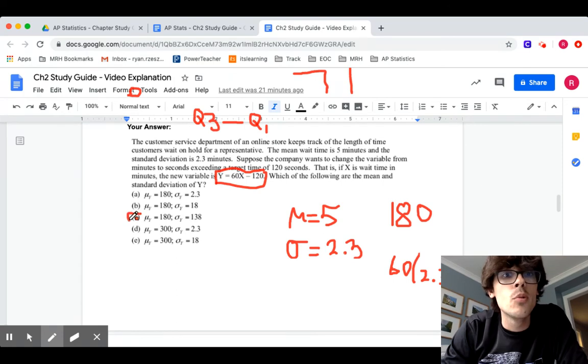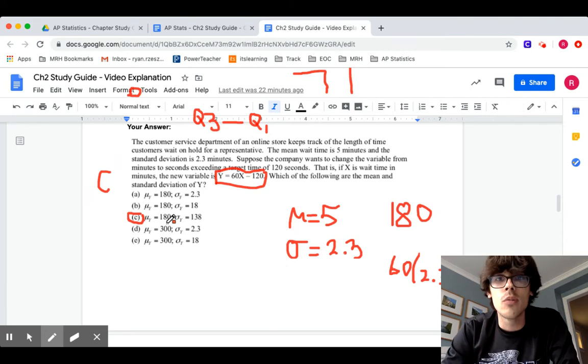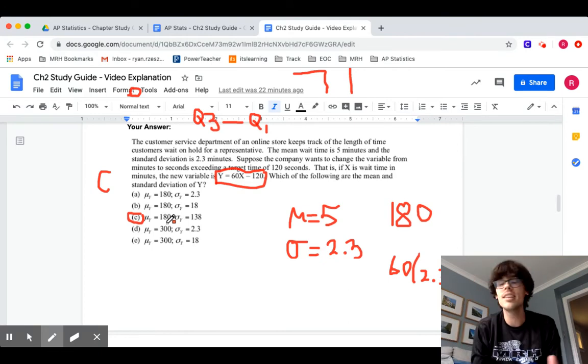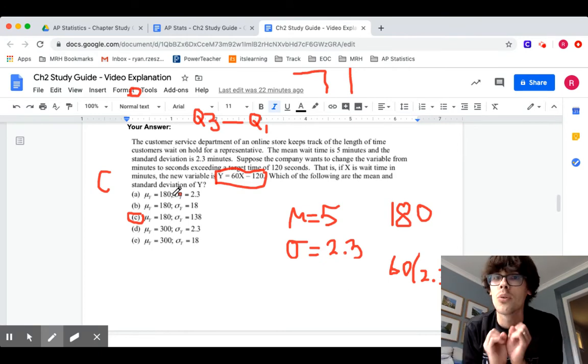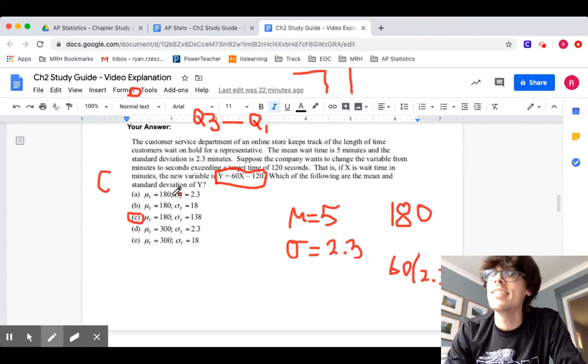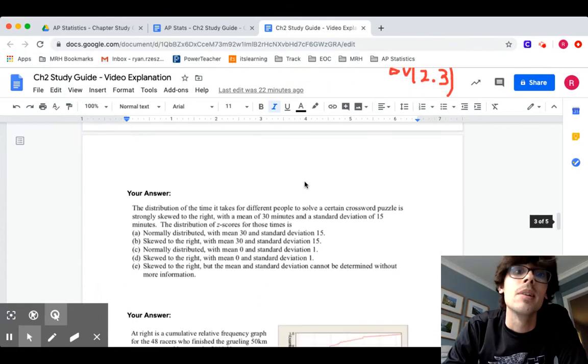Standard deviation is affected by multiplying and dividing, and it can't be negative. So you do the absolute value of that number. But it is not affected by adding and subtracting. If I take my data set and I add something to all the values or I subtract something, that doesn't change the spread. All you do for your standard deviation is 60 times 2.3, which I believe is 138. This is going to be choice C on number 3.